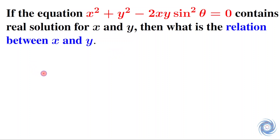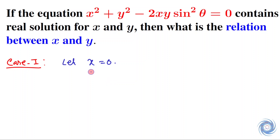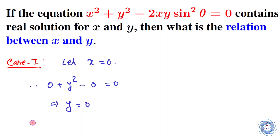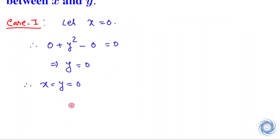First, let us assume that one of x and y is zero. Let us assume that x equals zero. Then from the given equation, we get that x and y are both equal to zero. Similarly, if we assume that y equals zero, then we also get that x equals zero. Therefore, in this case, we always have x and y both equal to zero.